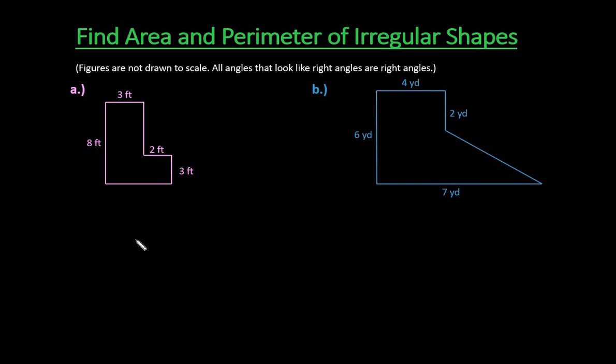Hi, for this video what I want to do is show you how to find the area and perimeter of irregular shapes. In my drawings, the figures are not drawn to scale and any angle that looks like a right angle is a right angle.